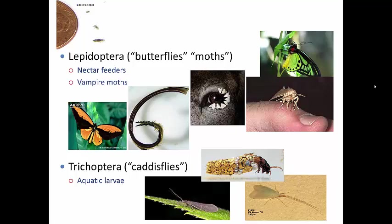In contrast, most moths are nocturnal. They typically are very drab in appearance, with grays, browns, and blackish coloration. They tend to have thread-like or comb-like antennae. At rest, their wings are held horizontally against the substrate, or folded flat over their back, or curved around their body — you can see that here.